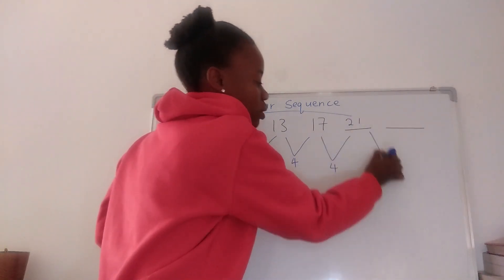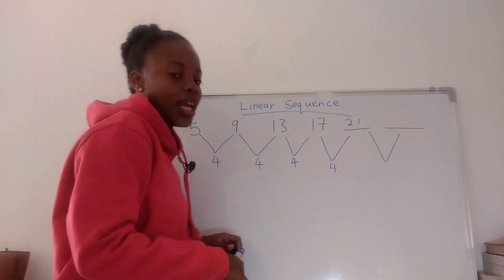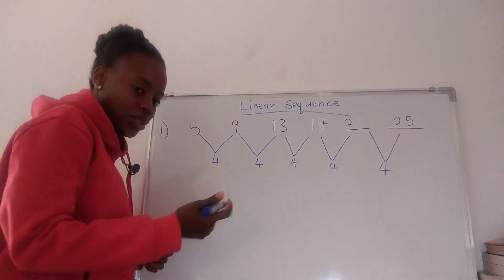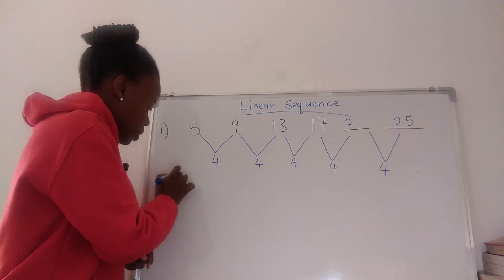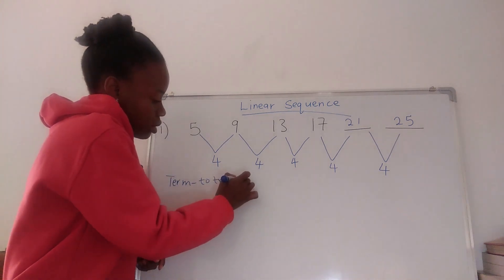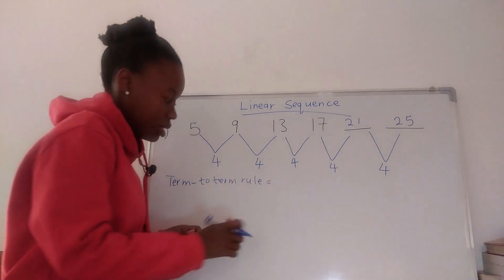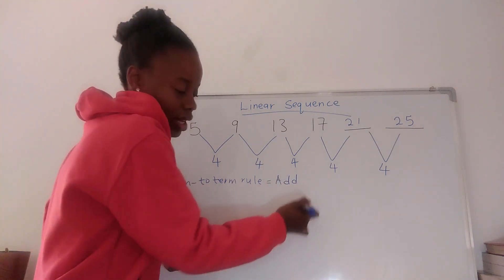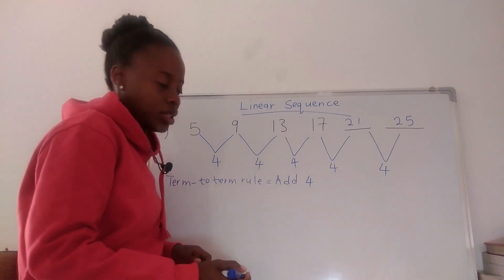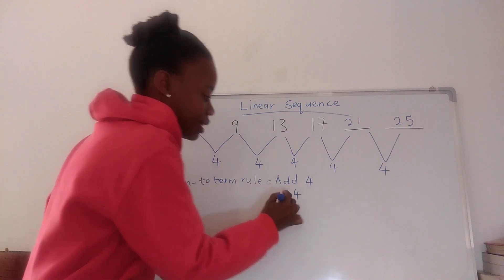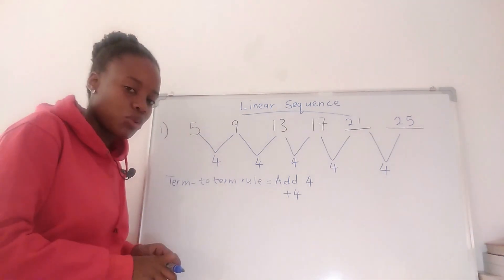So we're going to add 4 to get 21, then add 4 again to get 25. For the term-to-term rule, you just write: add 4. That is your term-to-term rule.